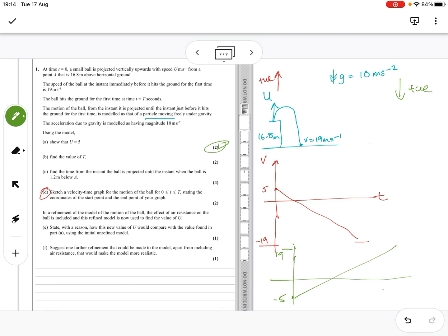In a refinement of the model, the air resistance on the ball is included and refined. A model is used to find the value of u. State with a reason how this new u would compare with the value found in part A using the initial unrefined model. I can put in the motion of the ball, the effect of air resistance. So the effect of air resistance would slow the ball down because when we treat it as a particle, there is no air resistance. So it would certainly slow the ball down.